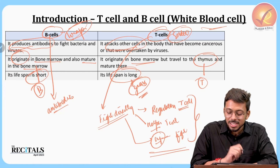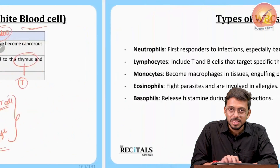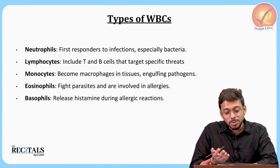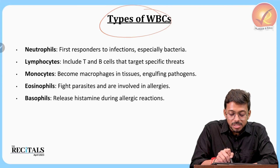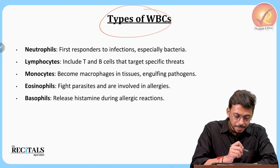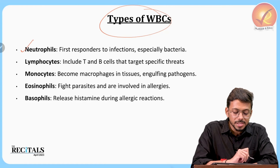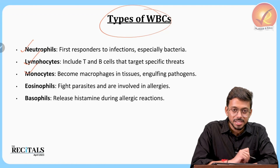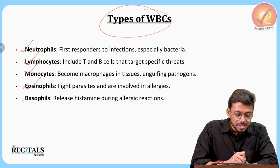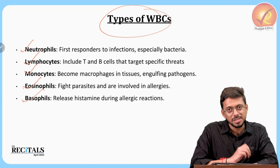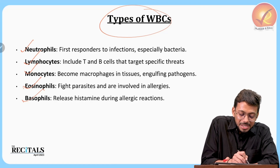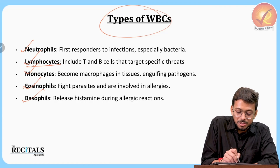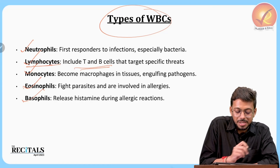There are various types of white blood cells: neutrophils, lymphocytes, monocytes, eosinophils, and basophils — each with different functions. T-cells and B-cells fall under the category of lymphocytes.